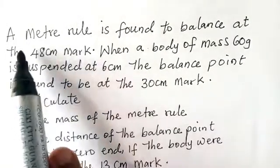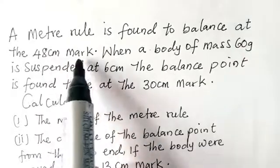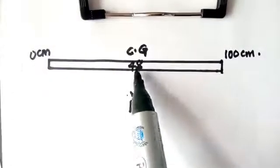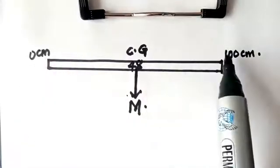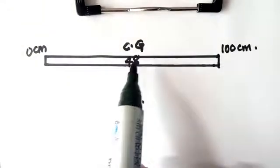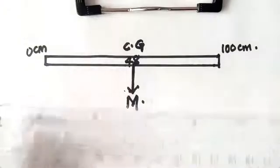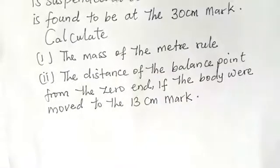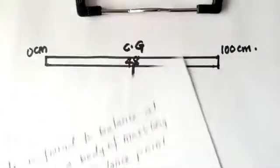In the first part, the first statement, a meter rule is found to balance at the 48 cm mark. For a meter rule to balance at 48 cm mark, it simply means that the center of gravity is at this 48 cm mark. From zero to hundred, at 48 cm mark it can balance horizontally without dangling left or right. Anywhere it balances for a uniform cross-sectional meter rule, that place where it balances will simply be the center of gravity. The center of gravity is the point where the mass of the body is at. That M means the mass of the meter rule.